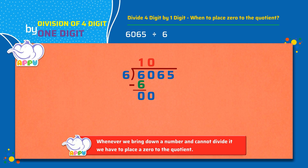Next, we bring down the number in the tens place, which is 6. So the number now is 6. We repeat the steps and divide again. We figure out how many 6's does it take to make 6, which is 1. We multiply 6 and 1, we get 6.